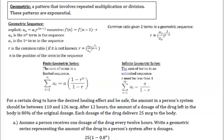The rest of these notes is written for you. Let's briefly go over what it says. Geometric: a pattern that involves repeated multiplication or division. These patterns are exponential. A geometric sequence: the explicit formula is a_n equals the first term times the common ratio to the n-1 power and the recursive formula is f of n equals f of n-1 times r. To get the common ratio given two terms of geometric sequence you can plug it into this formula right here. r equals a_y over a_x to the 1 over y minus x power. So x and y are n values and then a_y and a_x are a_n values.